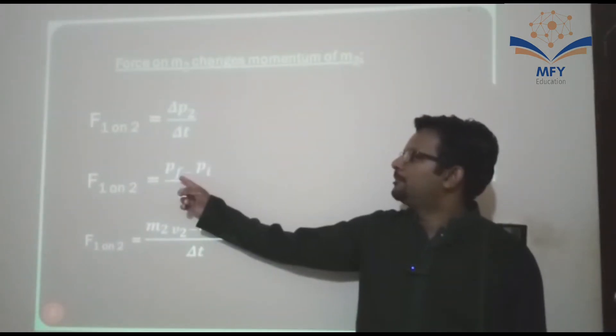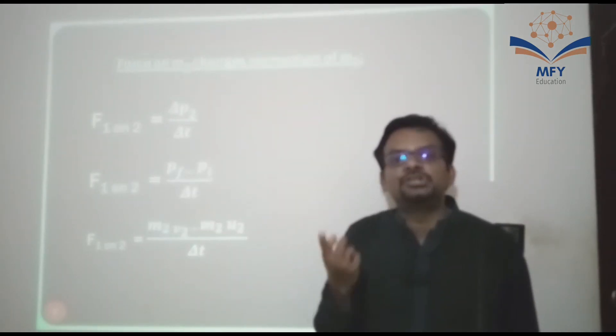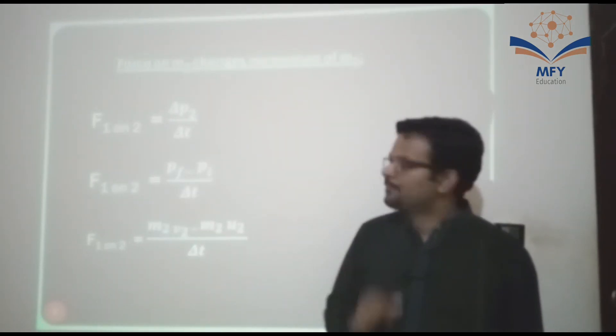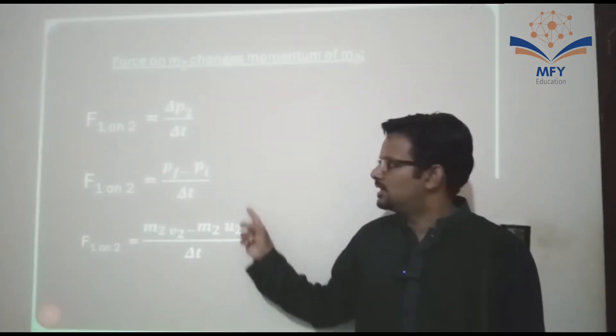So F is equal to Pf minus Pi. Body M2 final velocity is V2, initial velocity is U2. So Pf is equal to M2V2 and Pi is equal to M2U2.